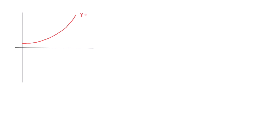Let's say we have a portion of the curve y = x² + 1, which looks something like this. This portion of the curve starts at an x value of 0 and ends at an x value of 3. Now imagine if we were to rotate this curve around the x-axis through 360 degrees.